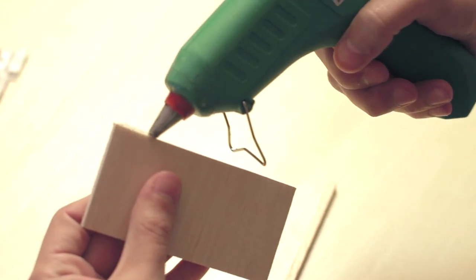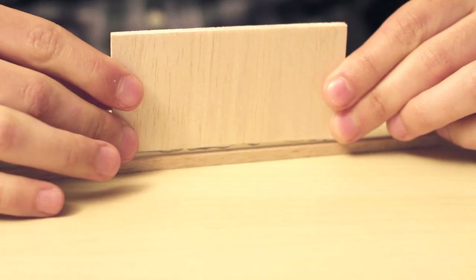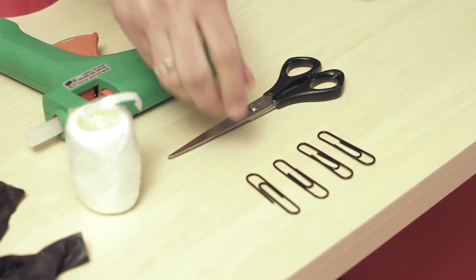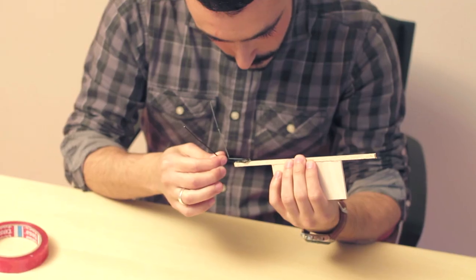We then used a micro-servo to control the direction. For the structure, we've used balsa wood, as it is very lightweight, and paper clips as the legs.